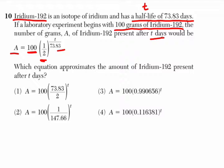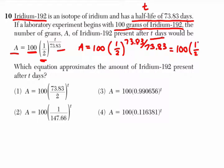So if you plug in, for example, 73.83, look what happens. You get one-half to the power of 73.83 divided by 73.83, and that's just equal to 100 times one-half to the first. In other words, it's one-halfing of 100, which is 50.